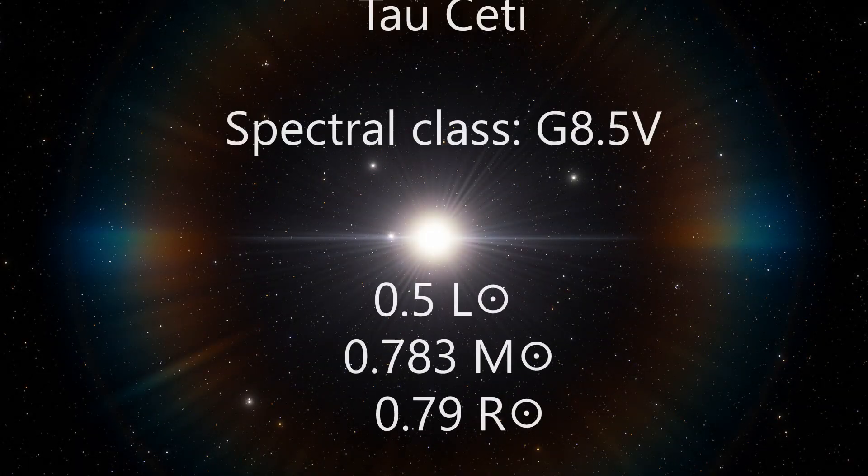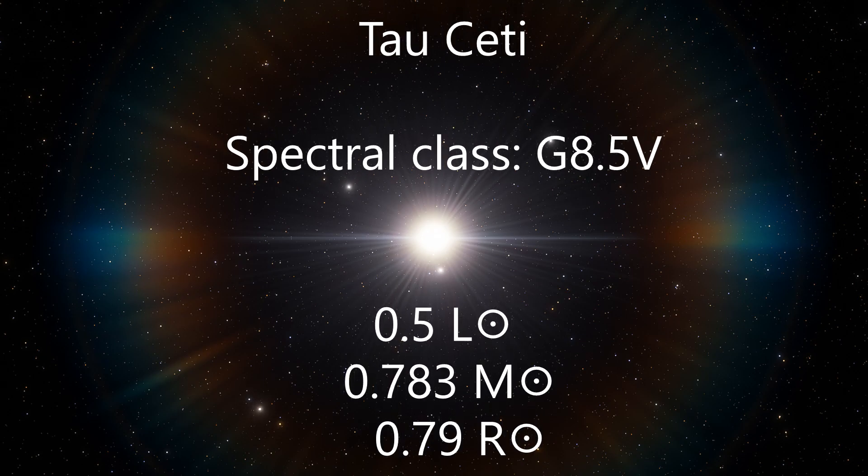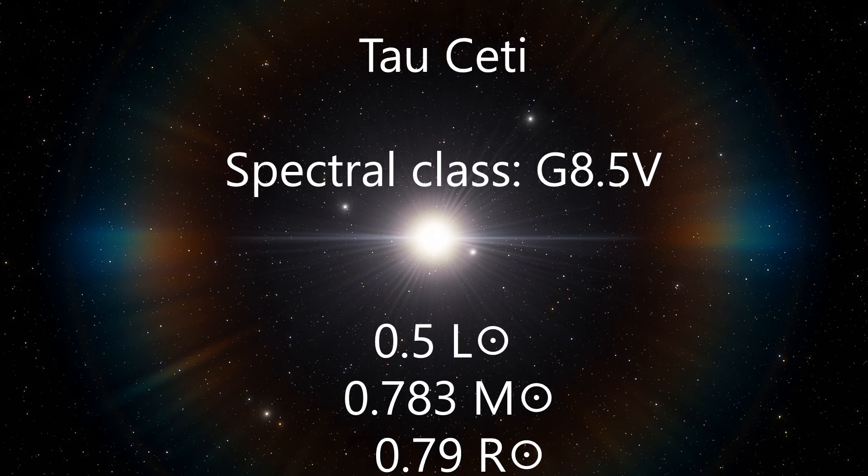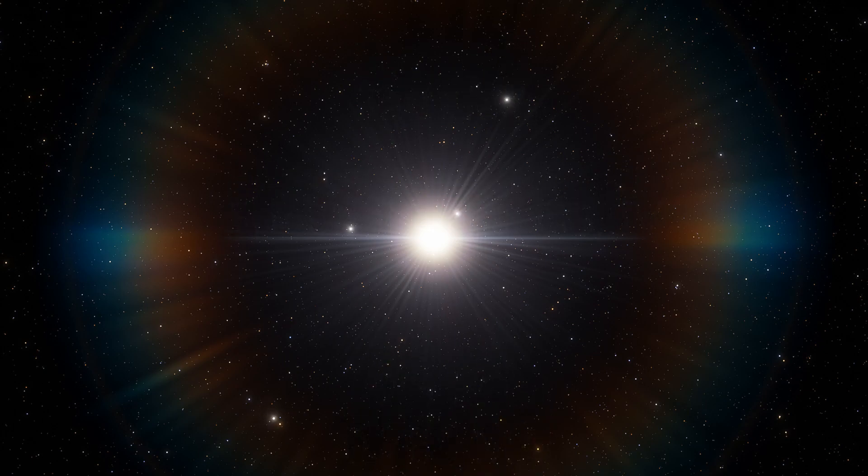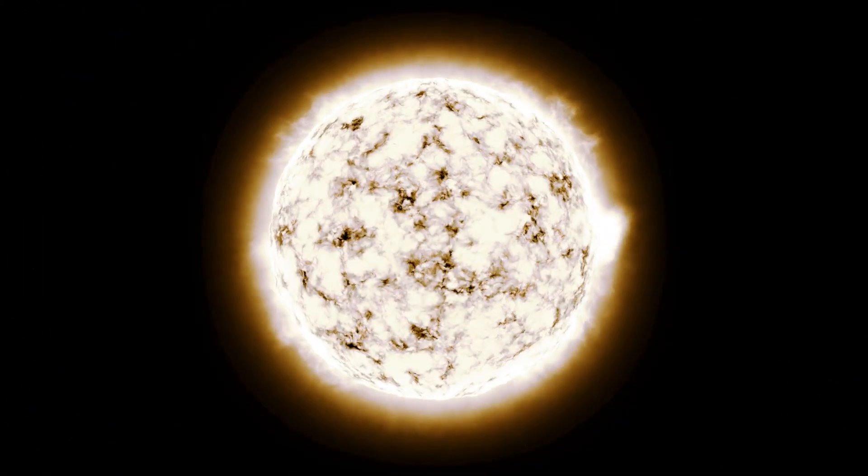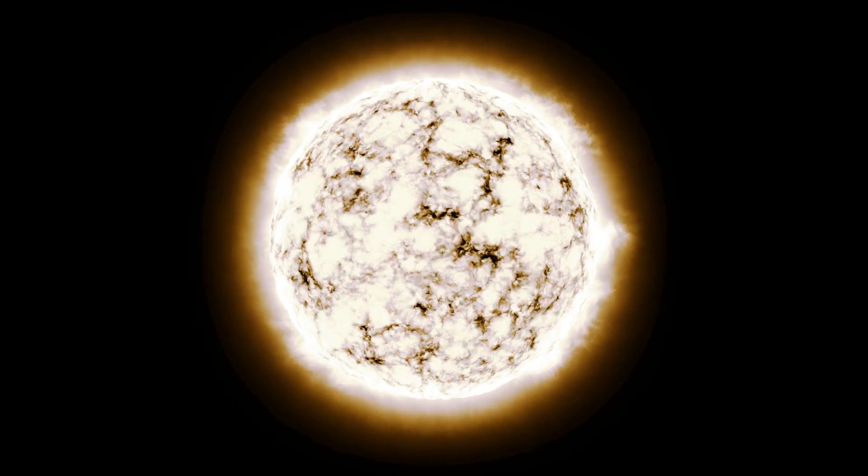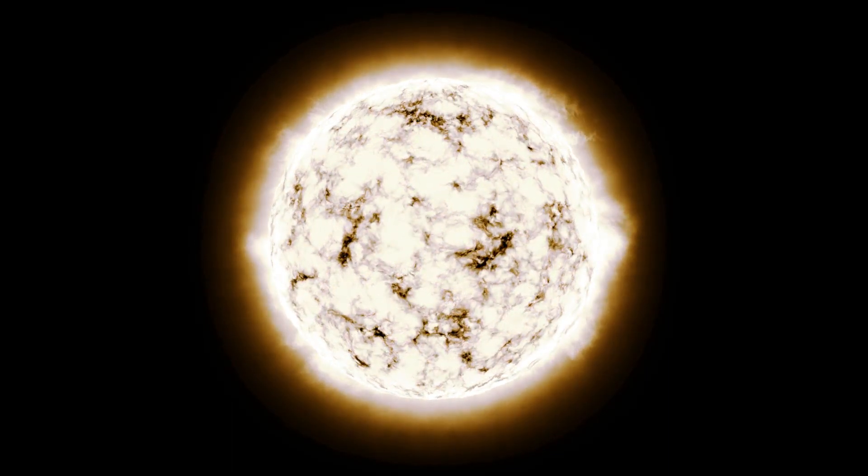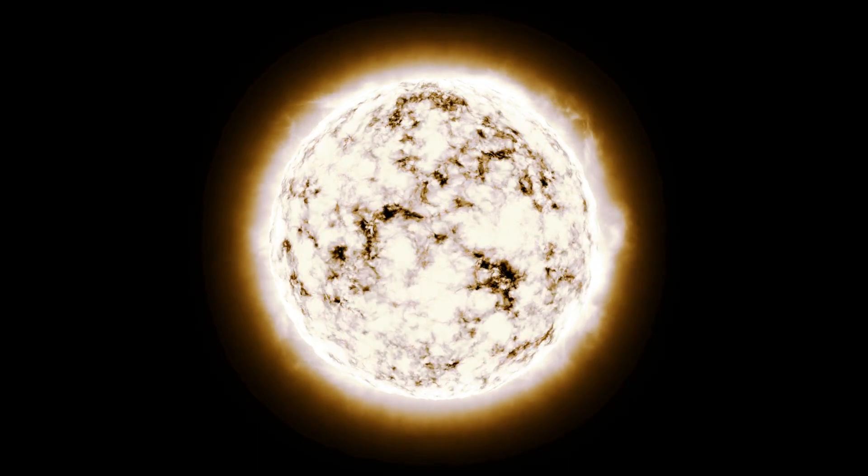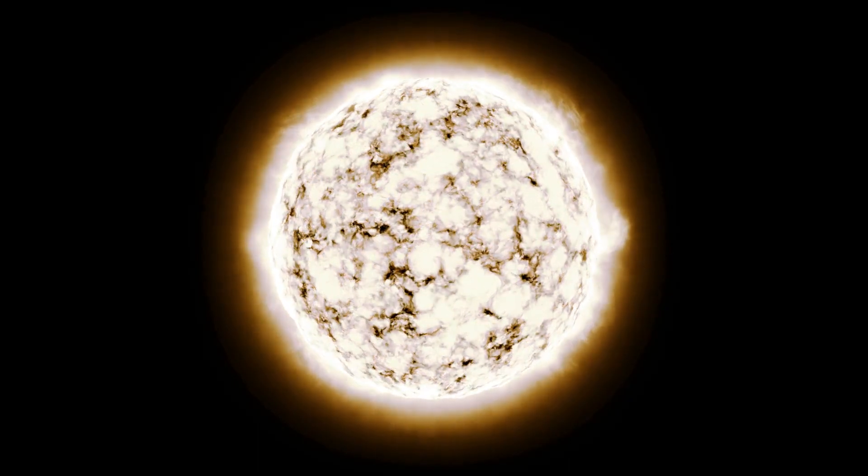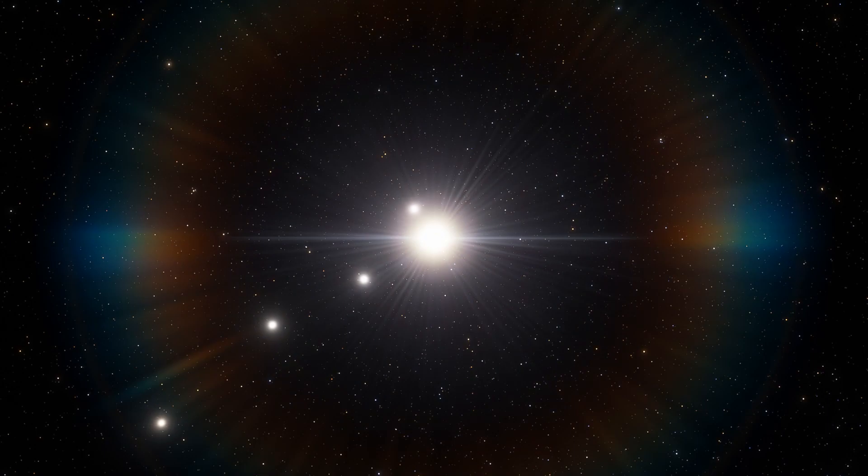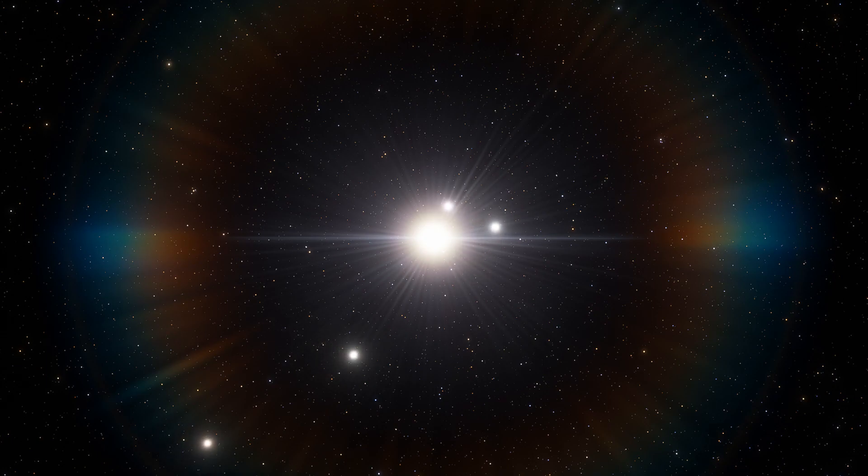Now let's travel to the Tau Ceti system, a sun-like star of spectral class G8.5V, located in the constellation Cetus in the southern hemisphere of the stellar sky. Located at a distance of almost 12 light years from the solar system, it is one of the closest stars to us and the closest single sun-like star. Tau Ceti is slightly smaller than the Sun in size. Its mass and radius are 0.783 and 0.79 of solar ones respectively, and the luminosity is about half of the solar.